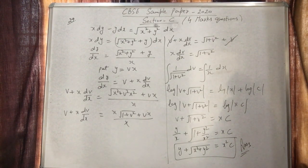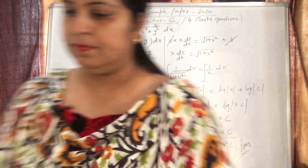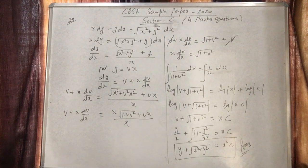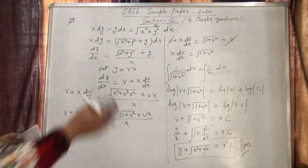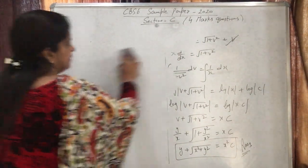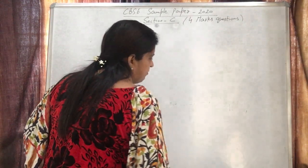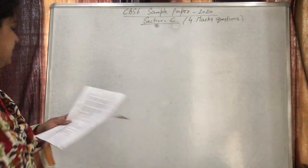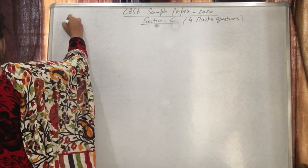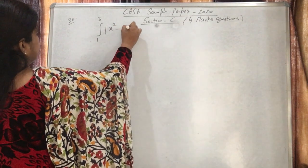That was the homogeneous differential equation for question 29. Now question number 30 is from integration — a definite integral with a modulus function. Evaluate ∫₁³ |x²-2x| dx. When the integrand has a modulus, we use the property to break at the zero point.